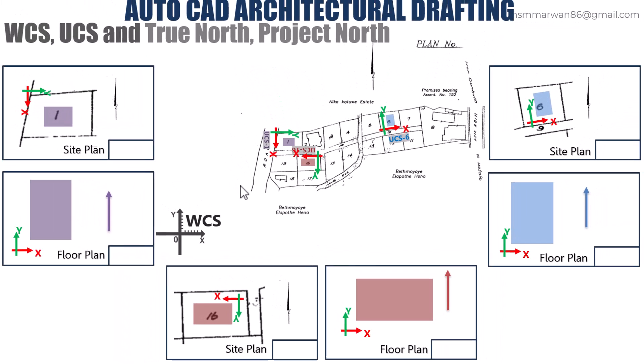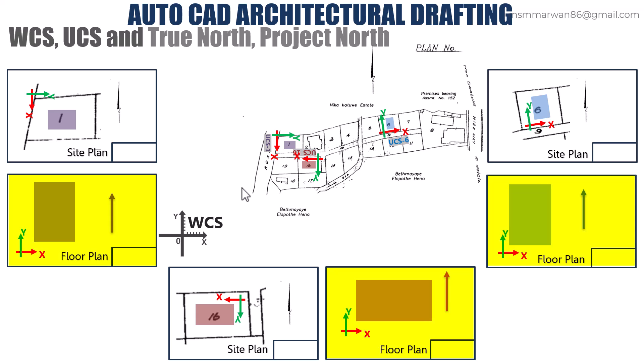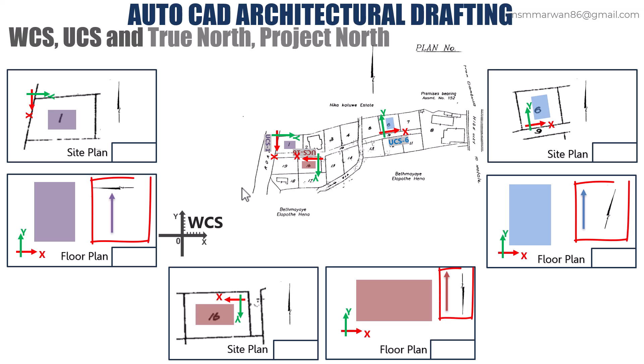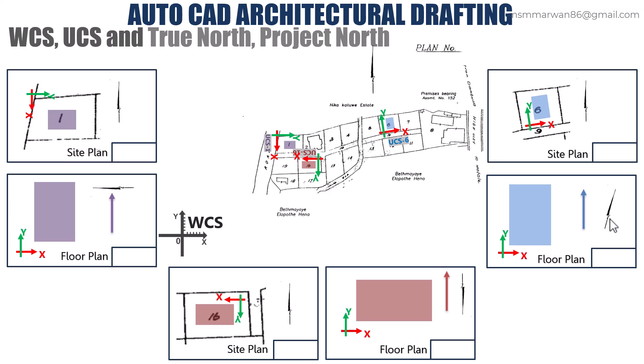If you focus only on the floor plans, you can see the UCS and the project north. However, in the floor plan we don't display the project north because it gives a wrong idea about whether it is a project north or a true north. Instead, in the floor plan we display the true north, and you can see how the true north relates to the project north across each lot. So in the floor plan, if you want to display the north direction it must be the true north. If you don't want to display it, you can leave it empty — that's fine. But the site plan should be arranged as per the true north and the true north should be annotated there.